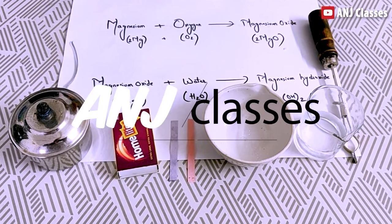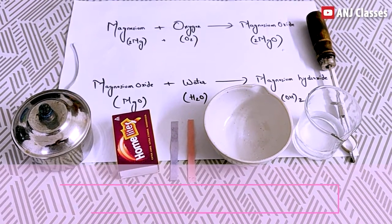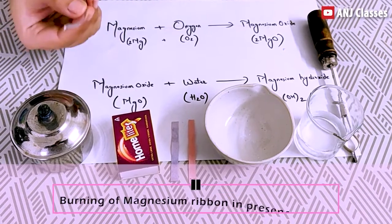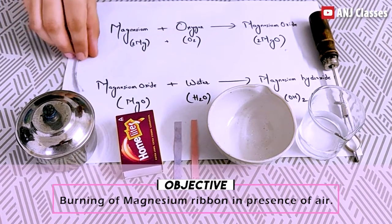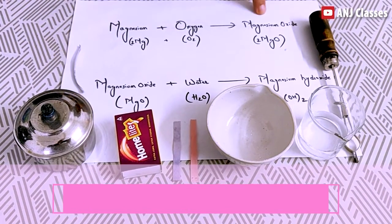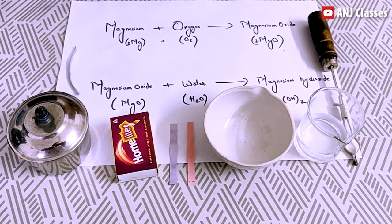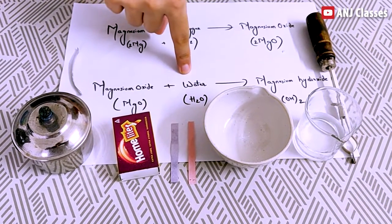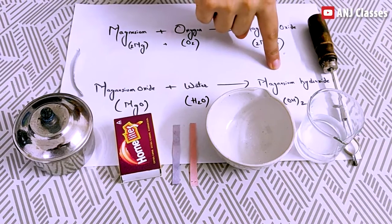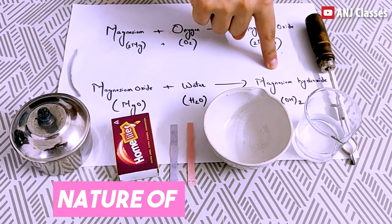Welcome students to my channel ANU Classes. Today I am going to show how magnesium ribbon burns in presence of air to form magnesium oxide and how it combines with water to form magnesium hydroxide. We will also test the nature of magnesium hydroxide.